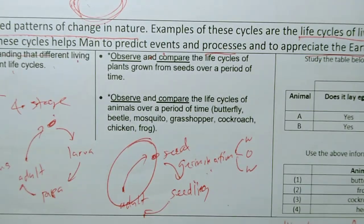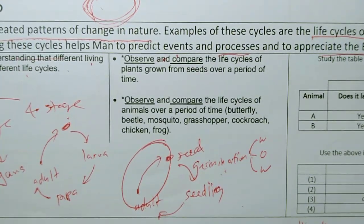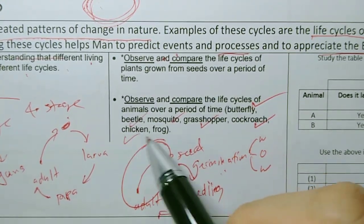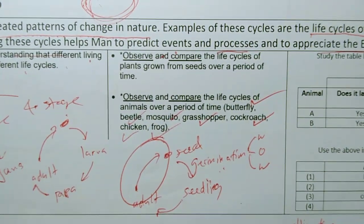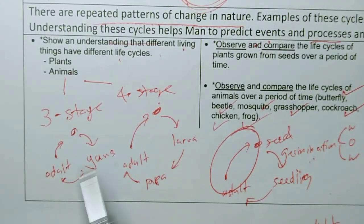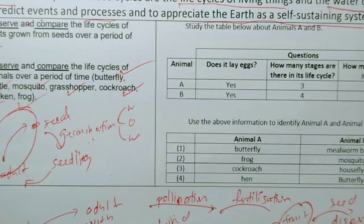You have to memorize the life cycle of a few animals: butterfly, cockroach, grasshopper, mosquito, beetle, chicken, and frog. You must know how many stages of the life cycle and be able to identify them very quickly. So let's take a look.